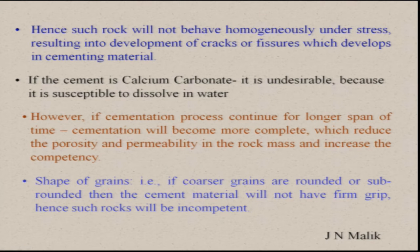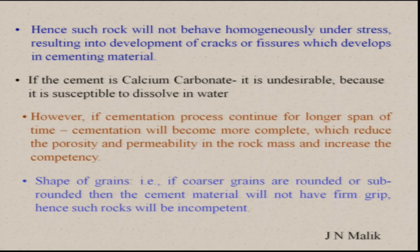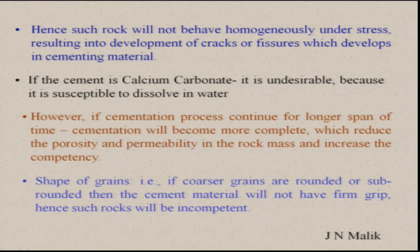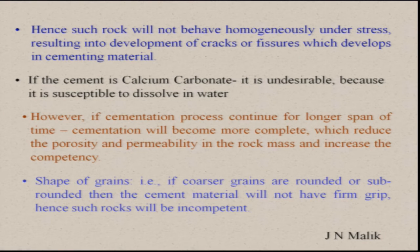The shape of the grains is also important. If the coarser grains are rounded or sub-rounded, then the cementing material will not have a firm grip. So if you have breccia as compared to conglomerates, then breccia is better because it will have angular fragments within it. This is the reason why rounded grains lead to incompetence of the rock. Most coarser gravels which are rounded in shape will result in incompetent rocks.